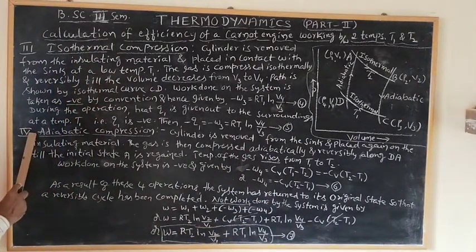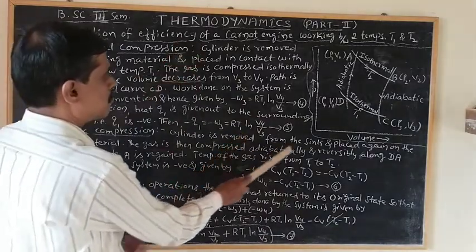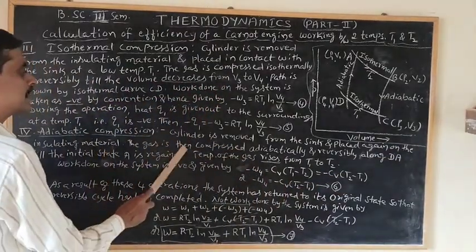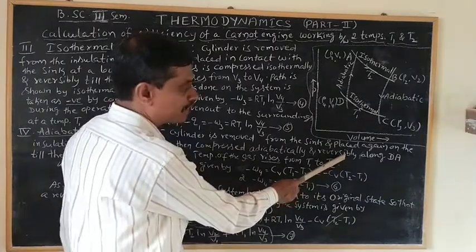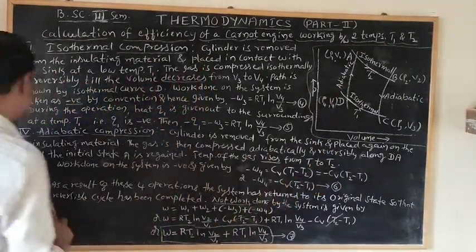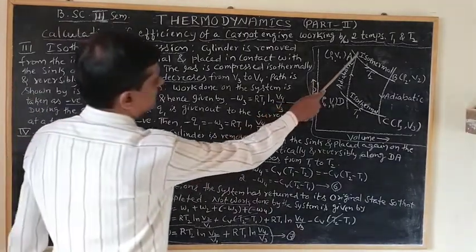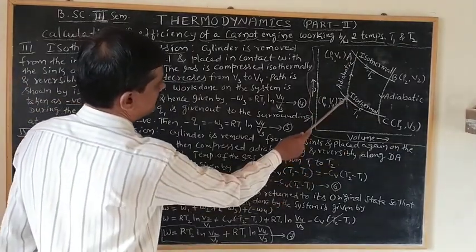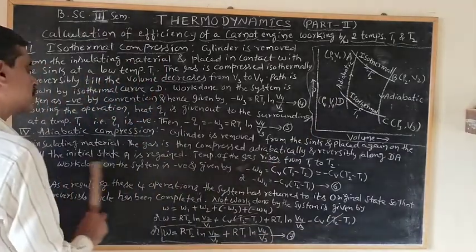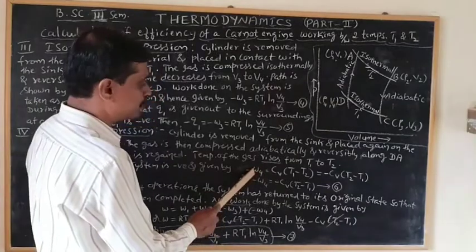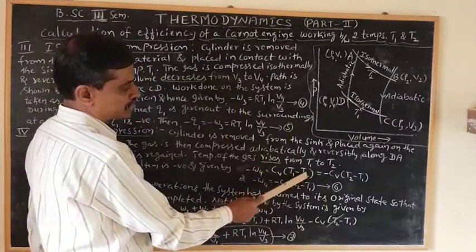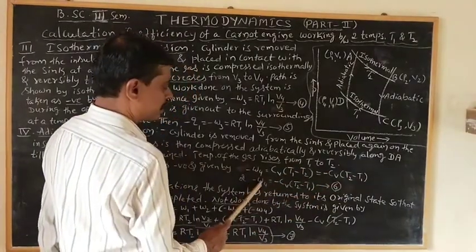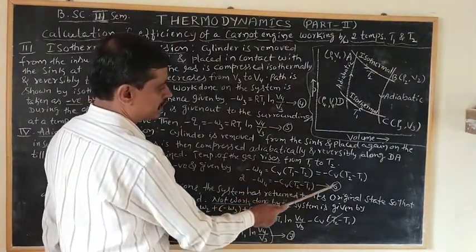The fourth and last operation is adiabatic compression. The cylinder is removed from the sink and placed again on the insulating material. The gas is then compressed adiabatically and reversibly along DA until the initial state A is regained. The temperature of the gas rises from T1 to T2. Work done on the system is negative and is given by −W4 = Cv(T1 − T2), or equivalently −W4 = −Cv(T2 − T1). This is equation 6.